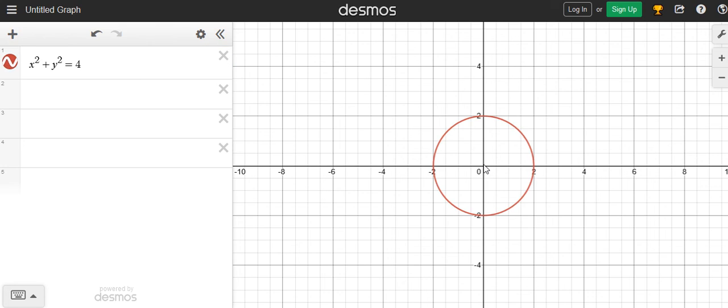Wherever you click, you'll be able to see the points. I hope you can observe that the radius is 2. If you click here at (2, 0), you can see the radius.